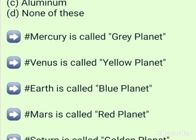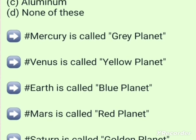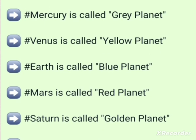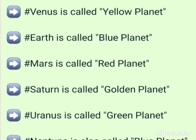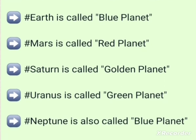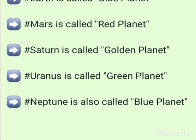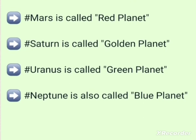Mercury is called the Gray planet. Venus is called the Yellow planet. Earth is called the Blue planet. Mars is called the Red planet. Saturn is called the Golden planet. Uranus is called the Green planet. Neptune is called the Blue planet.